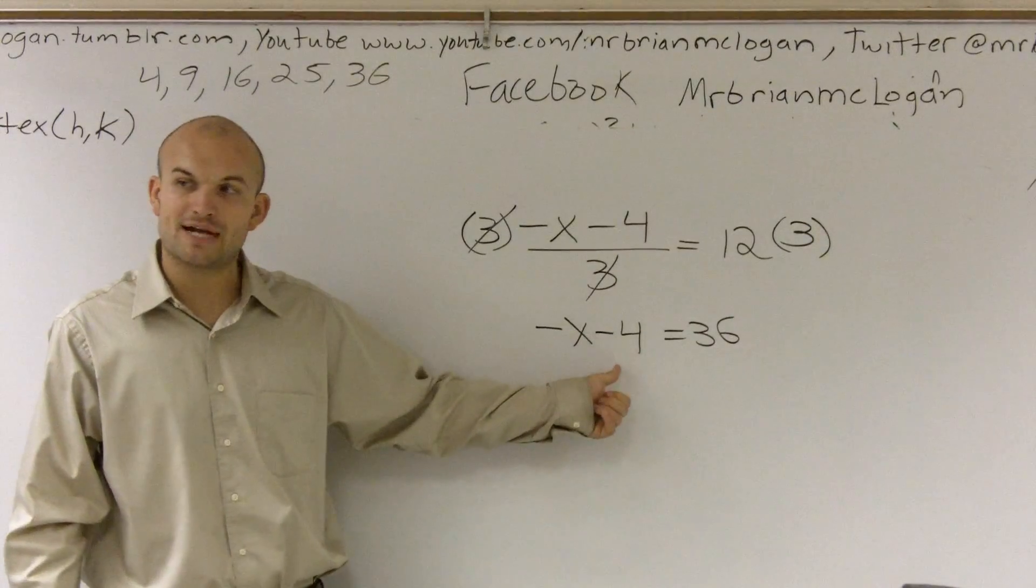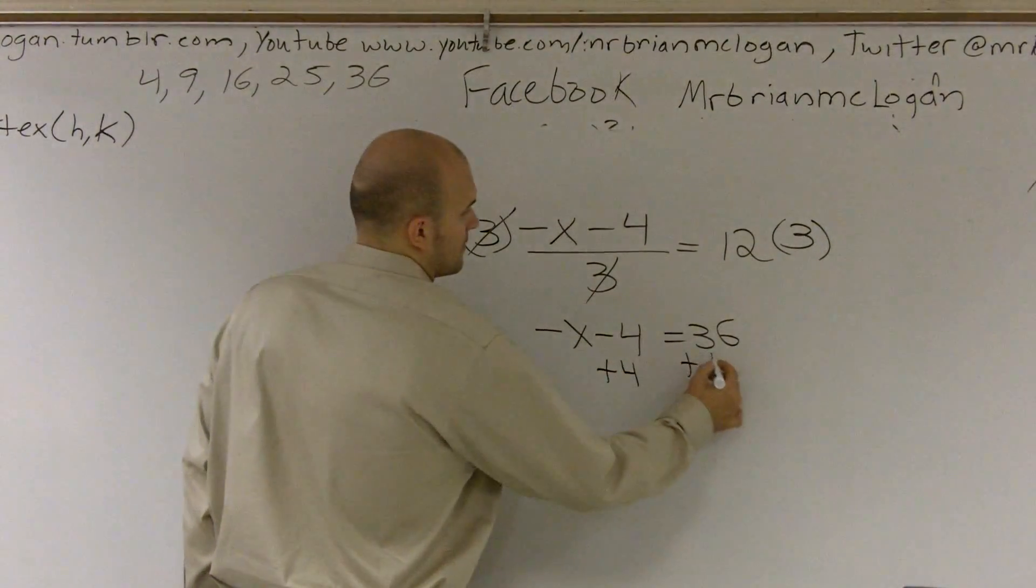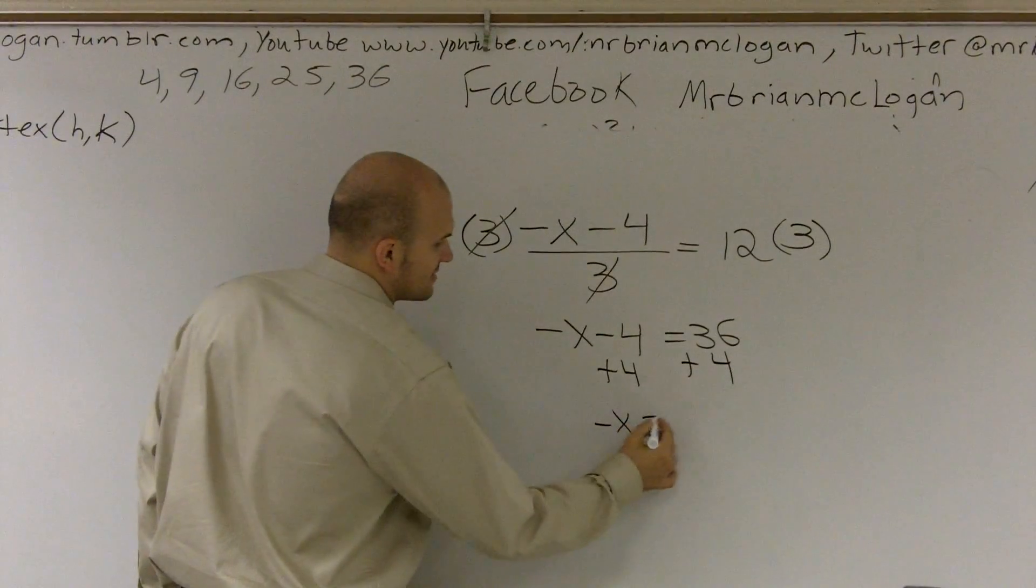What's happening to my variable? It's being subtracted by 4. So we're going to add 4. Then we have negative x equals 40.